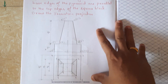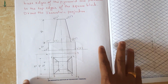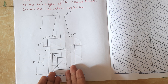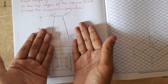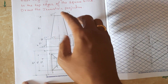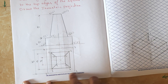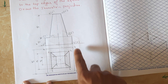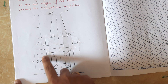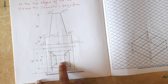For that, what we have to do first is draw the corresponding top view and corresponding front view. From the top view we can see three squares: 60 mm, 40 mm, and 20 mm.